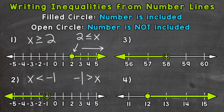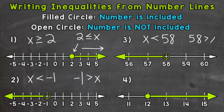On to number three, where we have an open circle above 58, so 58 is not included in our solutions. The arrow is pointing to the left, so we want all of the numbers less than 58 as solutions. So x is going to be less than 58, or we could say that 58 is greater than x.